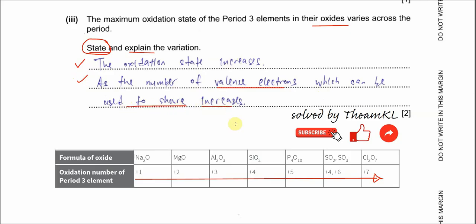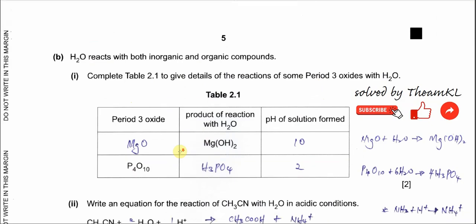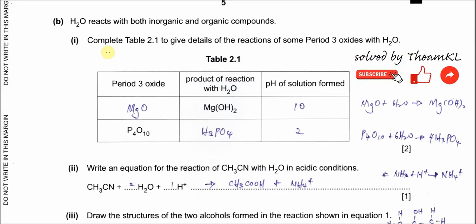Part B, part 1: complete the table. The oxide that produces magnesium hydroxide must be magnesium oxide. The equation is: magnesium oxide reacts with water to form magnesium hydroxide. The pH of the solution is around 10 — this is the standard pH value to remember for magnesium hydroxide.